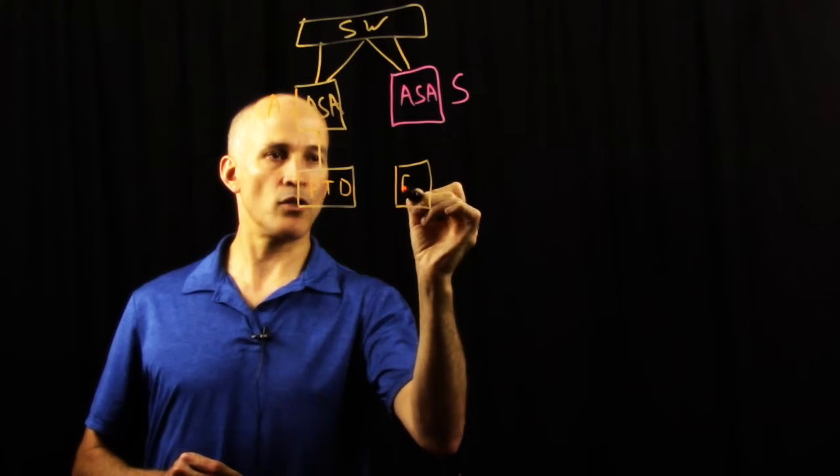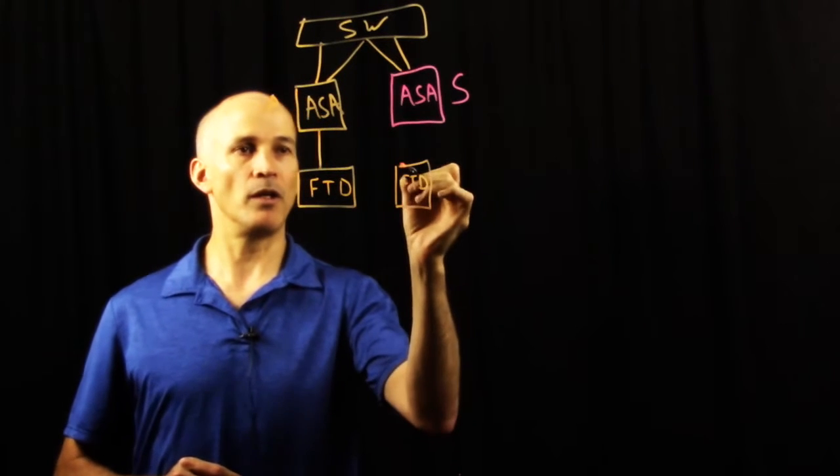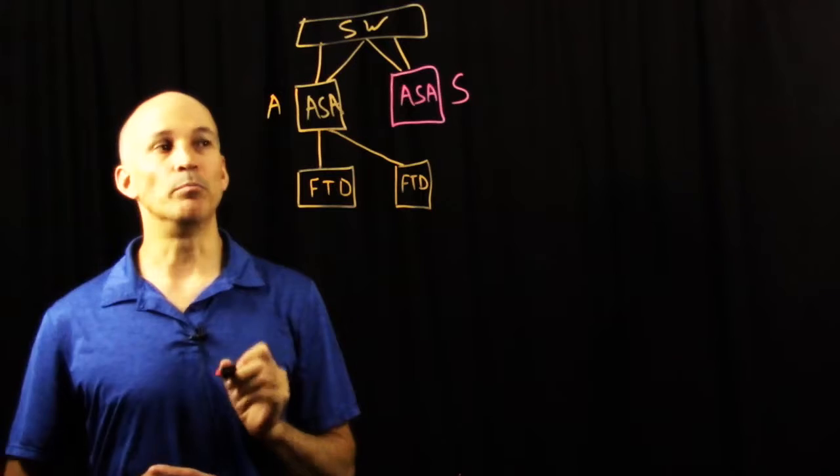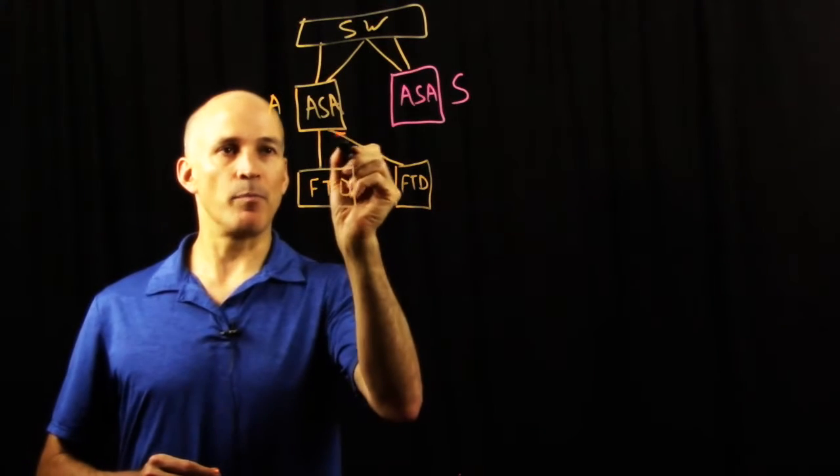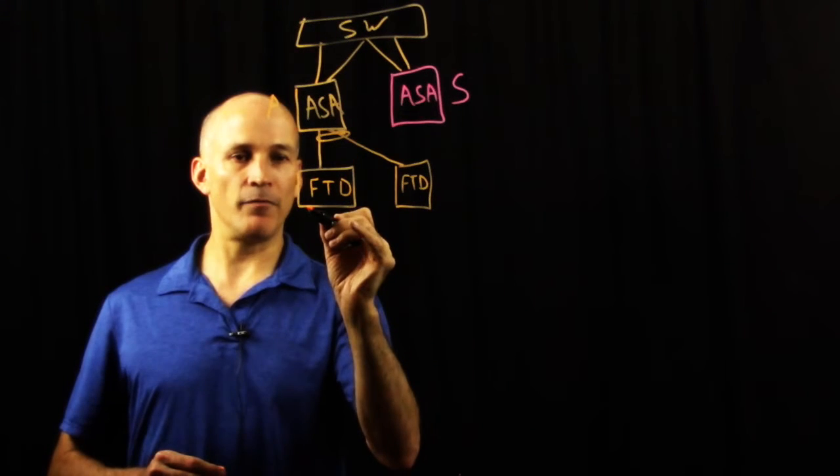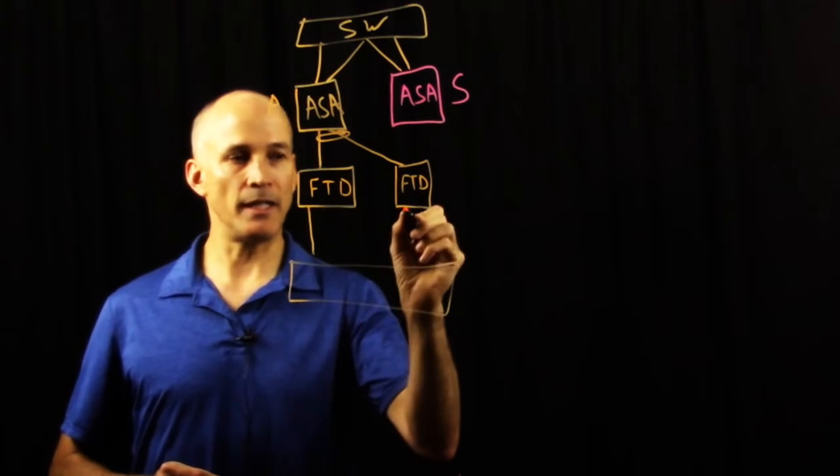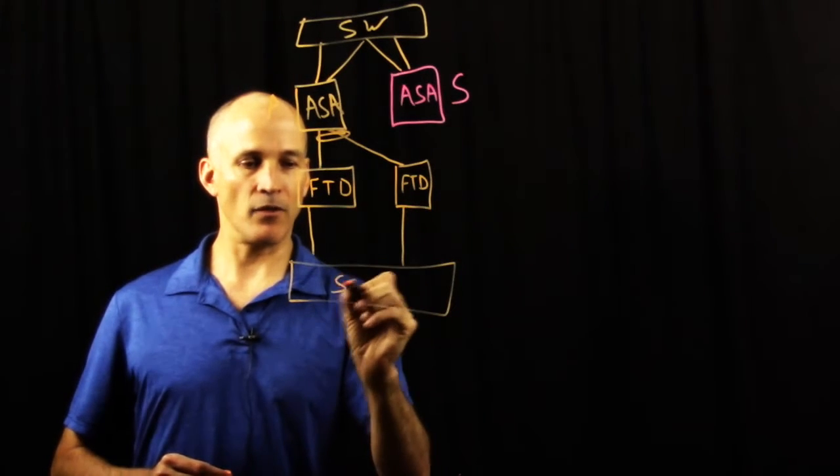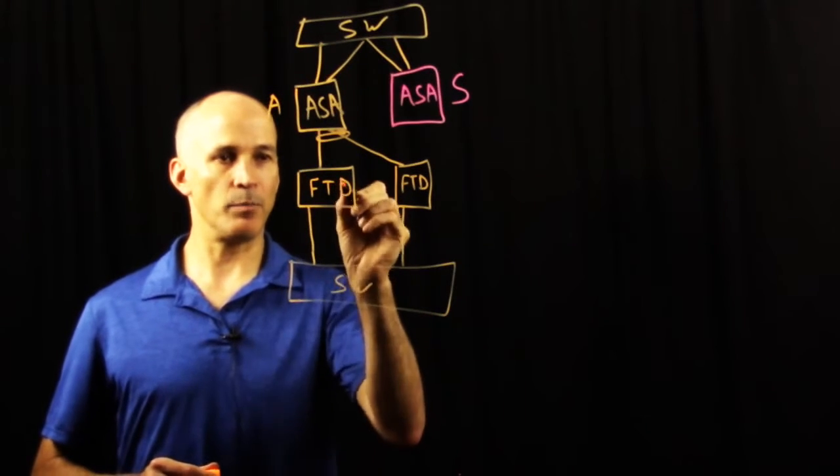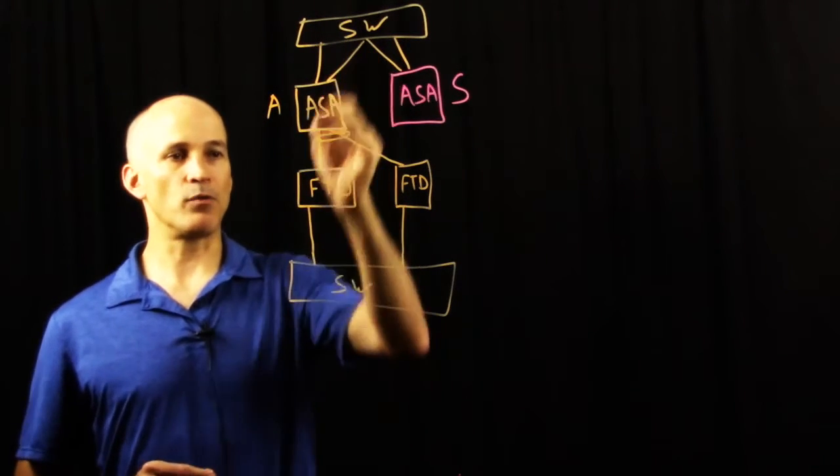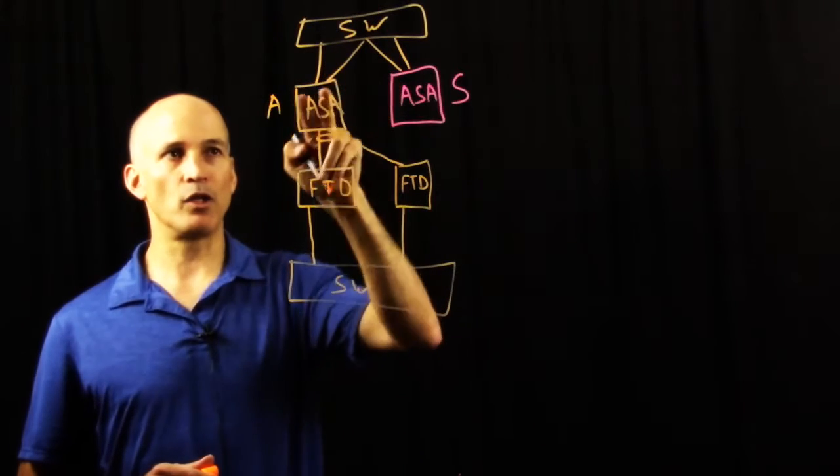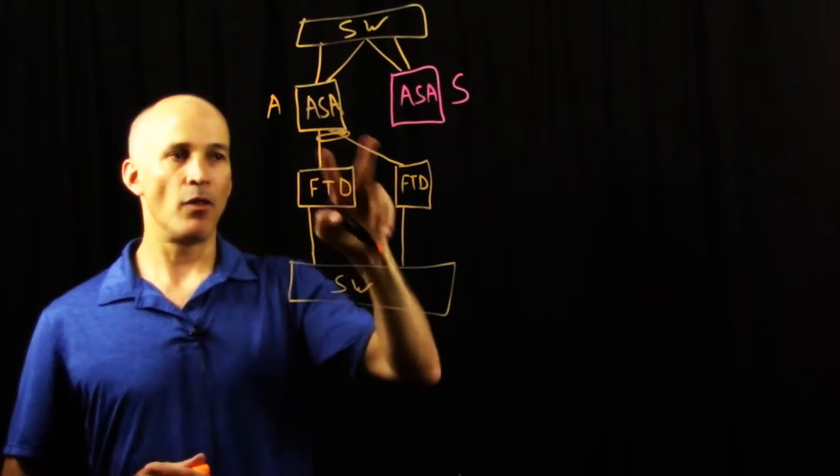Each cluster or each member of the cluster is connected to both ASAs and we have a port channel. And hanging off each FTD is also connected into the switching environment behind the deployment. Packets would move through the switch, go through the primary ASA through the port channel to a cluster of FTD.